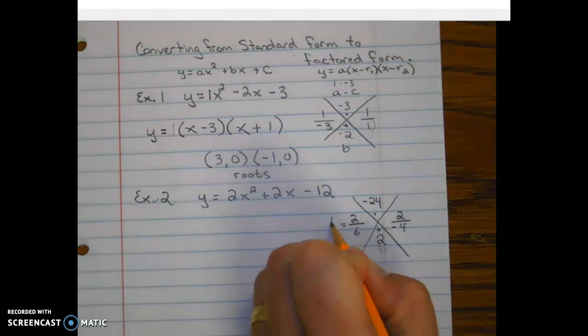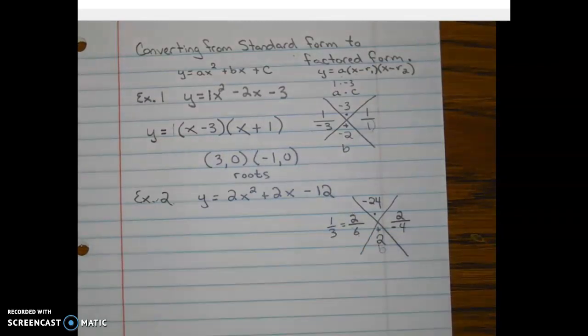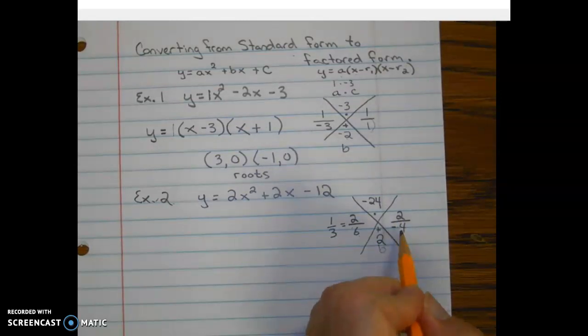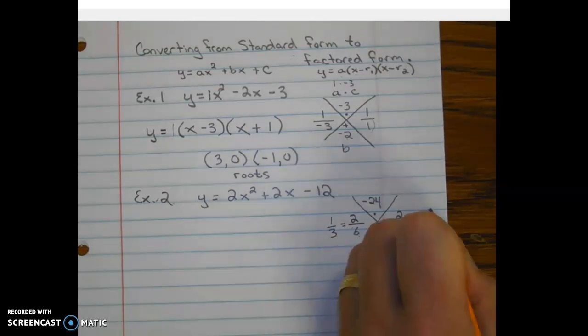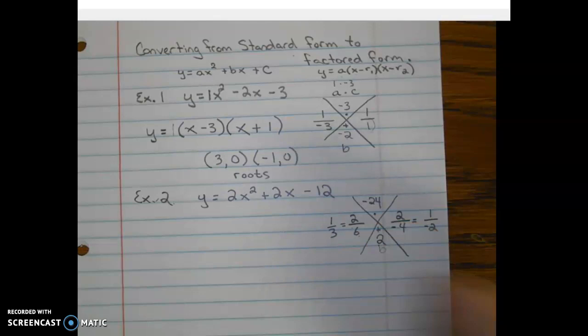So 2/6 reduces to 1/3. And 2 over negative 4 reduces to 1 over negative 2. Now please make sure you keep the sign on the bottom number of your ratio.